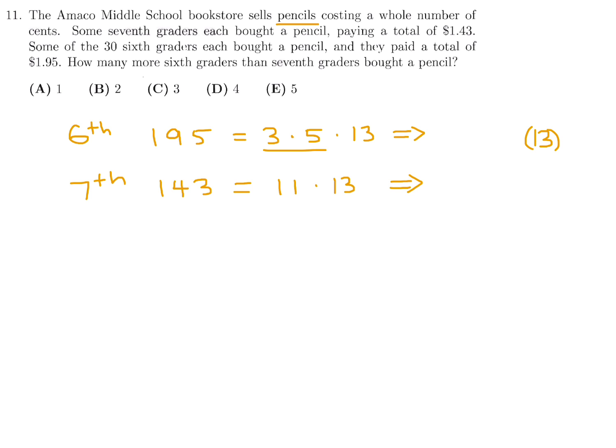And if it is, then this will be how many 6th graders there are, 3 times 5. So 15 of the 6th graders each paid $0.13, and that's how you get a total of $1.95. In a very similar way, for the 7th graders, the cost of the pencils has to be the same. But the number of 7th graders is 11. And if 11 of them each paid $0.13, that totals $1.43. So 15 6th graders bought a pencil and 11 7th graders bought a pencil. So the difference is 4. So on number 11, the answer is D.